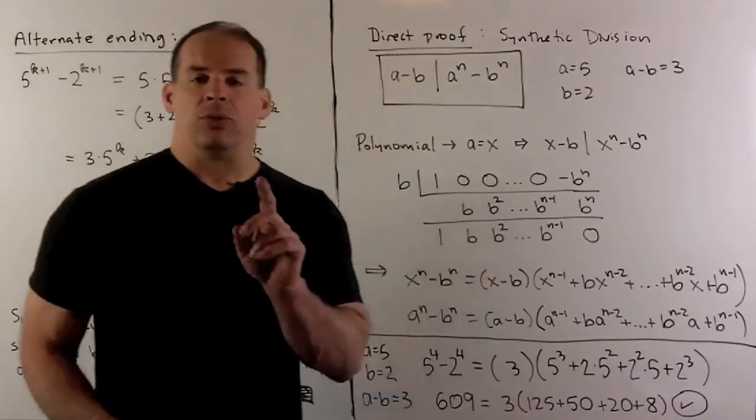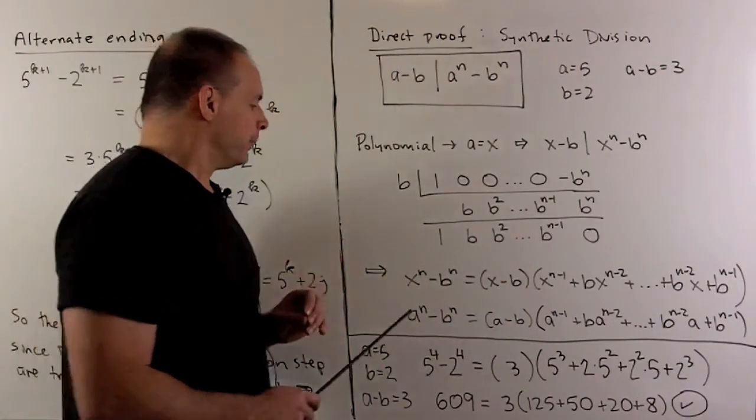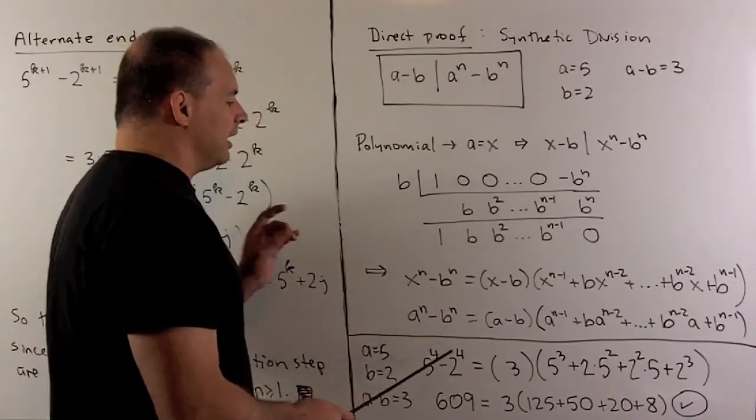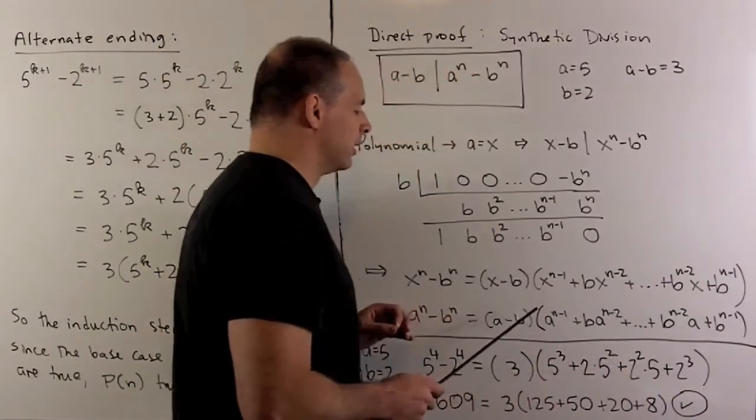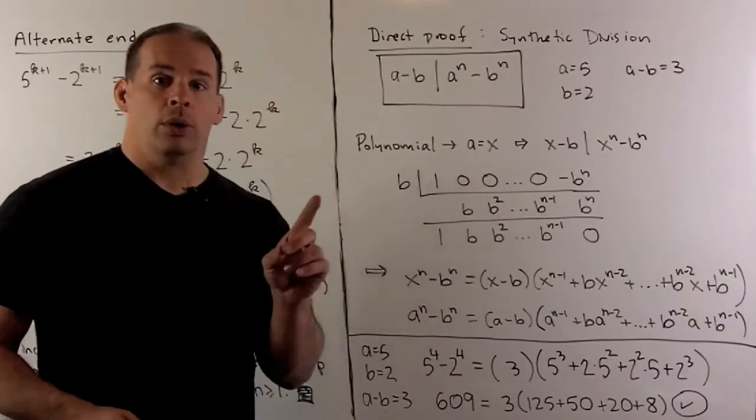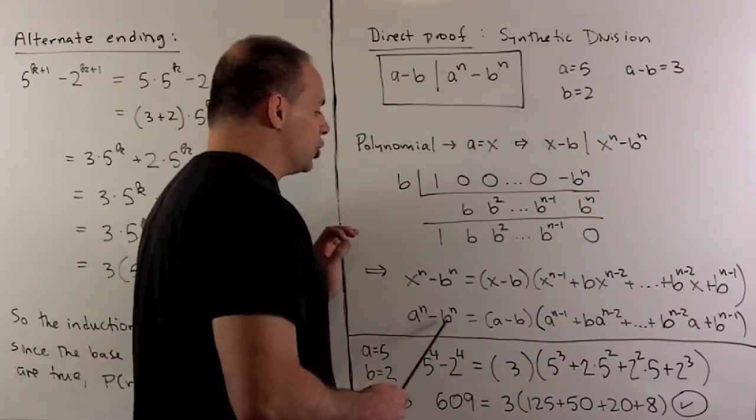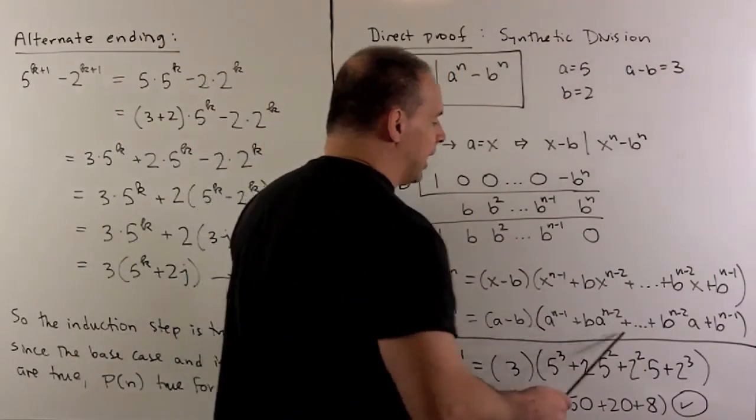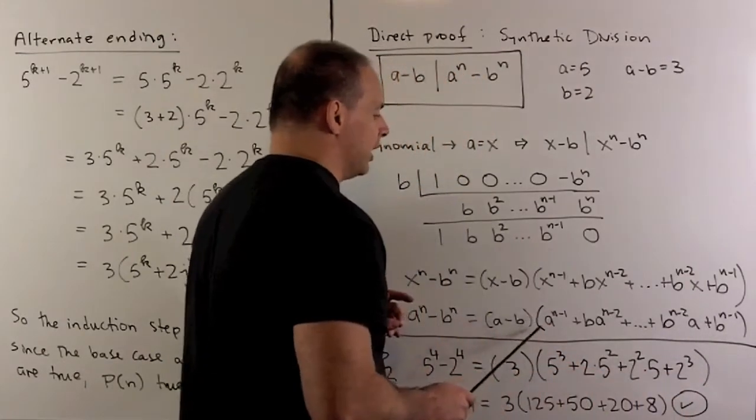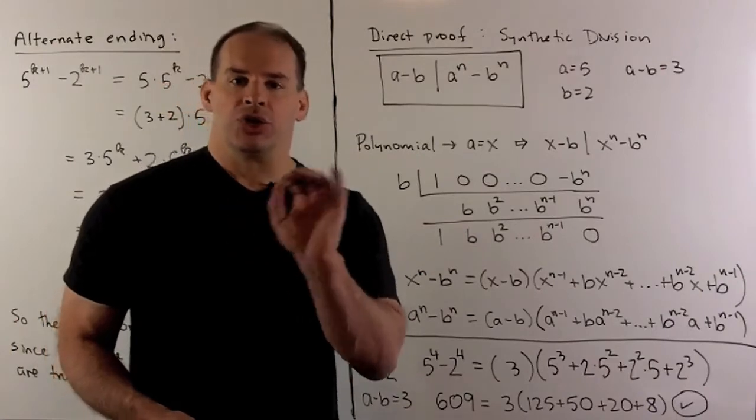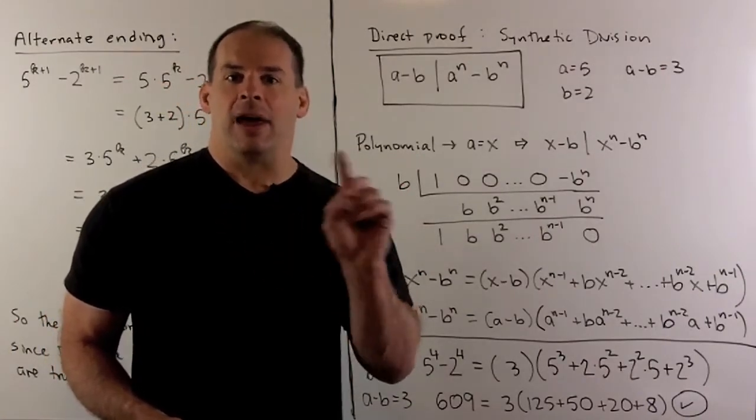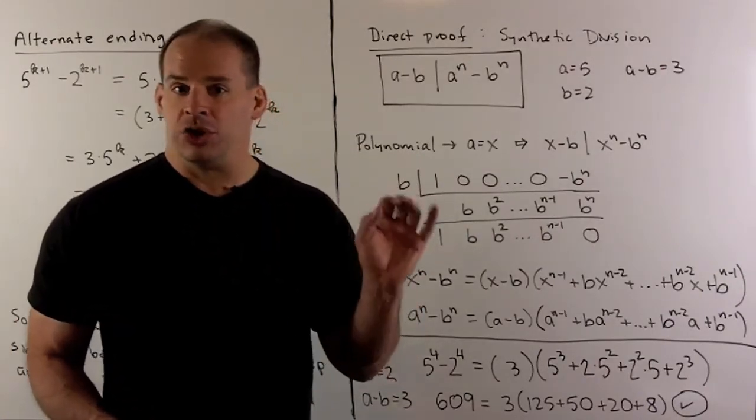Now, if we replace x with a, we have a to the n minus b to the n equals a minus b times this expression here. Main thing to note, if a and b are integers, then this complicated expression here is always an integer. So there are a lot of terms, but we're just taking integers times integers, and then adding them to integers. So we get integers back.